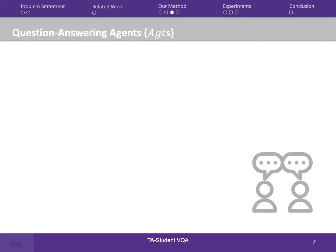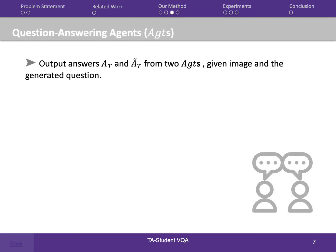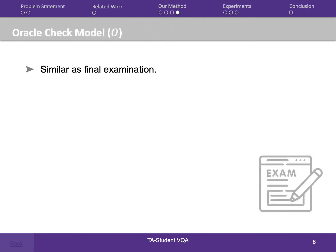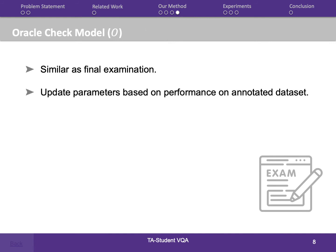For the question-answering agents, two VQA agents act as two students to answer the questions generated by the TA. Once their answers softly converge — implying that after several rounds of discussion these two students finally come to an agreement — it is time for the real exam. The Oracle check model is responsible for supervising and updating parameters of the question generation model and the VQA agents, preventing the two agents from converging to a local optimum. Once the rate of change slows, it will go back to the QA stage.